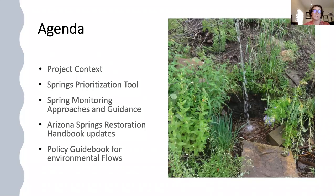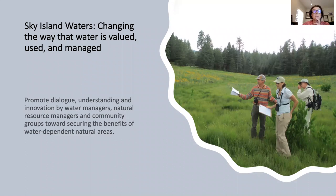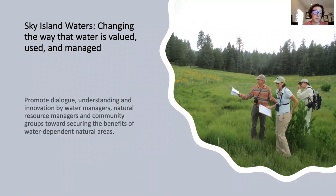I'll walk you through some project context and then focus on sharing outcomes and tools, including our springs prioritization tool, some work around monitoring approaches, an update to the Arizona Spring Restoration Handbook, and some policy information around environmental flows. This project, Sky Island Waters, was called 'changing the way water is valued, used, and managed.' It was born out of thinking about climate change adaptation, and springs became a big focus for managers across the region when thinking about important places to focus attention for resilience.